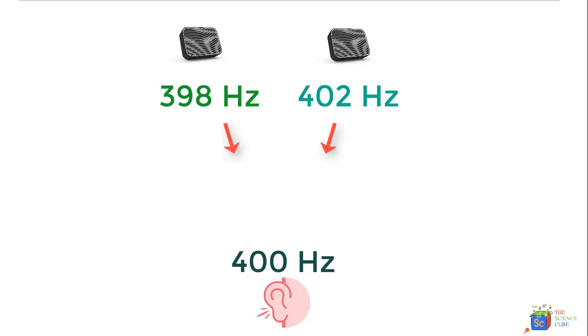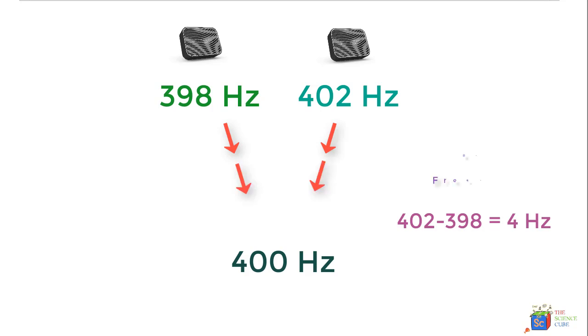You cannot quite make out the difference between a 400 Hz frequency and 398 Hz or 402 Hz. But when you hear the frequency of 400 Hz, that is a combination of the two different sound frequencies, what your ears can make out is a rhythmic variation in the intensity of the sound that goes up and down in slow, wavering beats that have a frequency of their own. And this frequency will be 402 minus 398, or 4 Hz, and this is what we call the beat frequency.